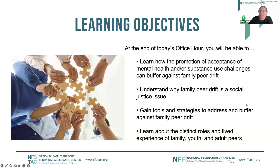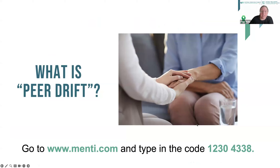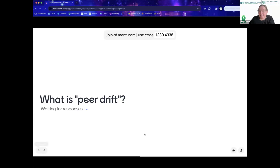For today's office hour, we hope you leave understanding how promoting acceptance can help buffer against family peer drift, why family peer drift is a social justice issue, gain tools and strategies to address peer drift, and learn about the distinct roles and lived experience of family, youth, and adult peers. Let's start by finding out what you think peer drift is—there is no wrong answer. You can go to www.menti.com, use the code 12304338, or use the link in the chat, and type a couple of words or a sentence about what you think peer drift is.